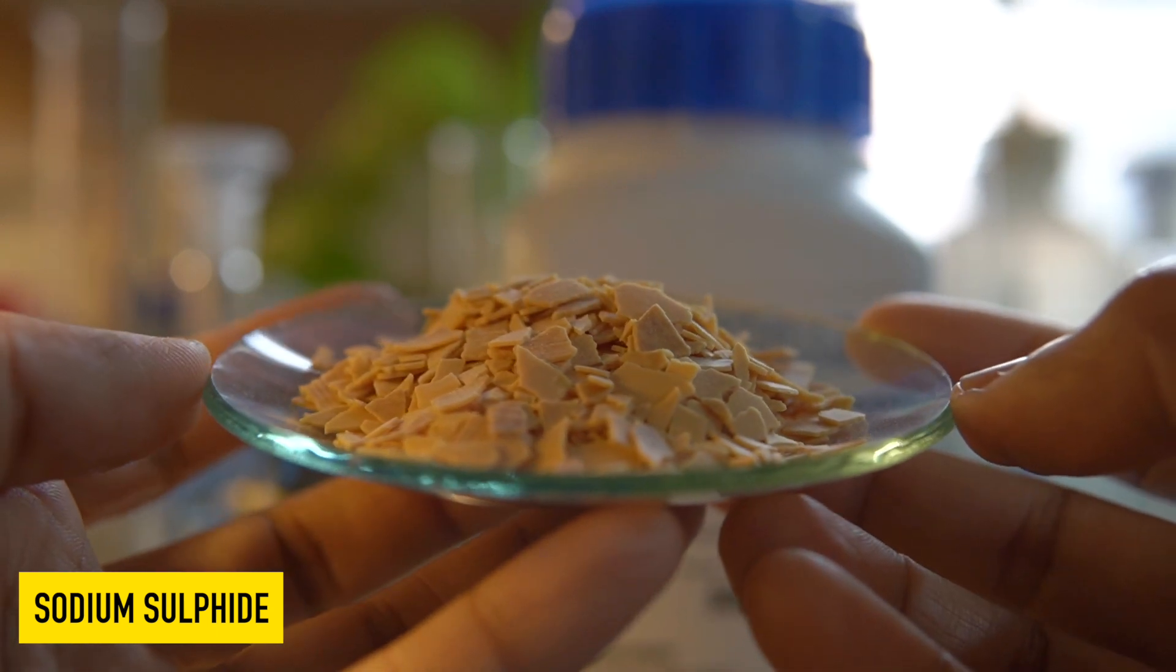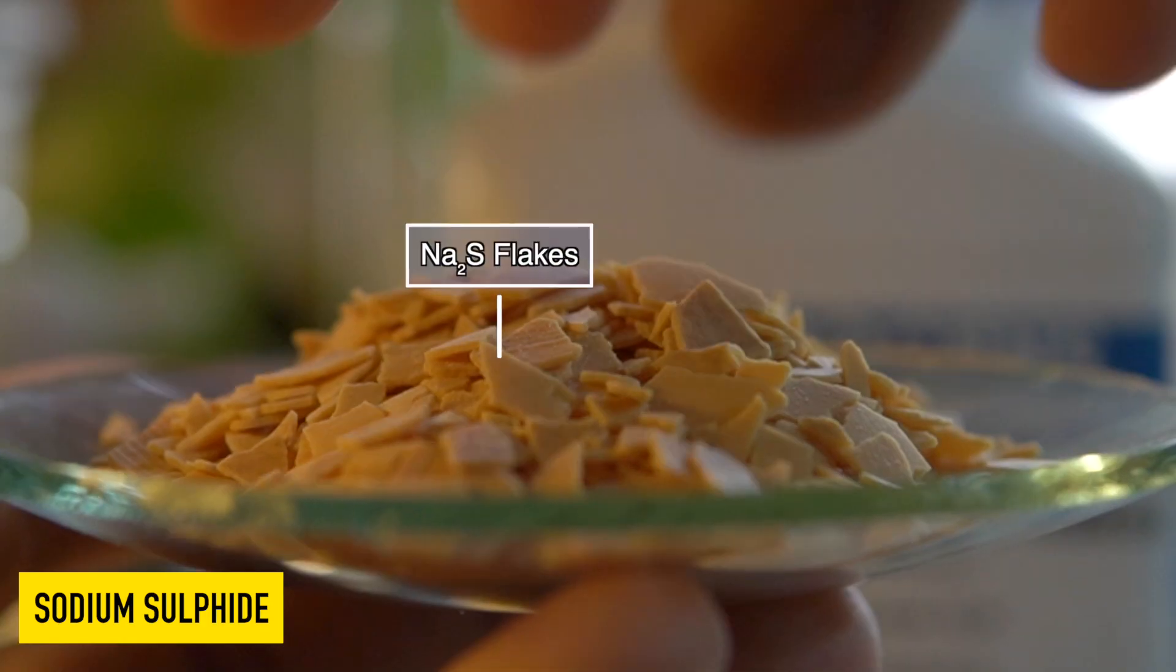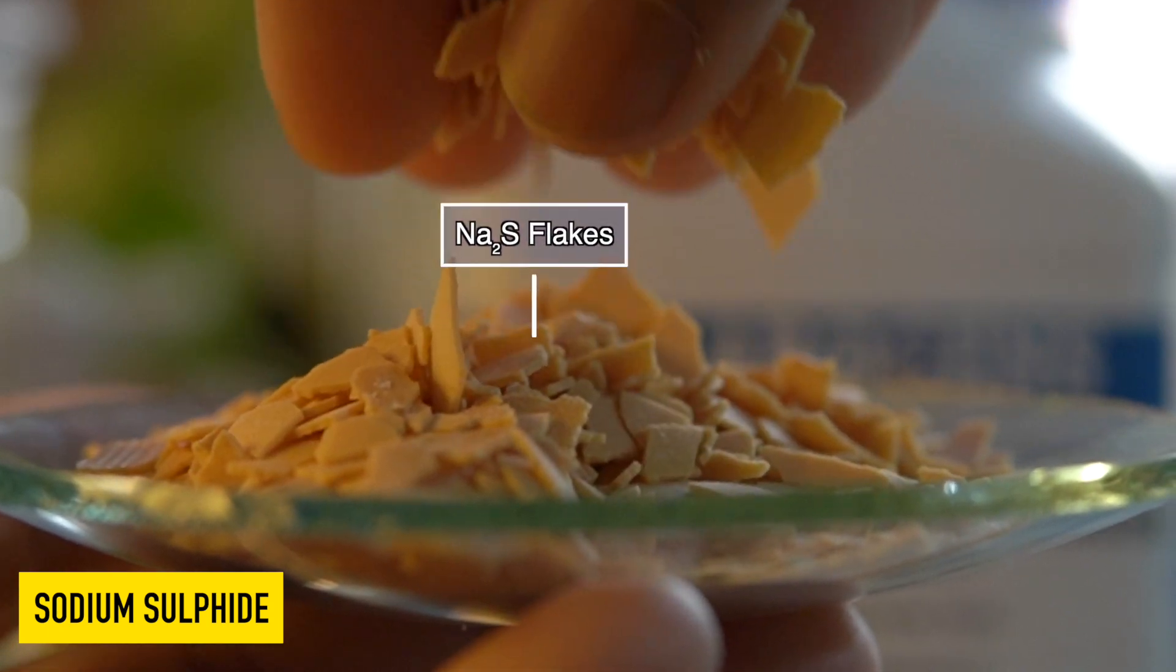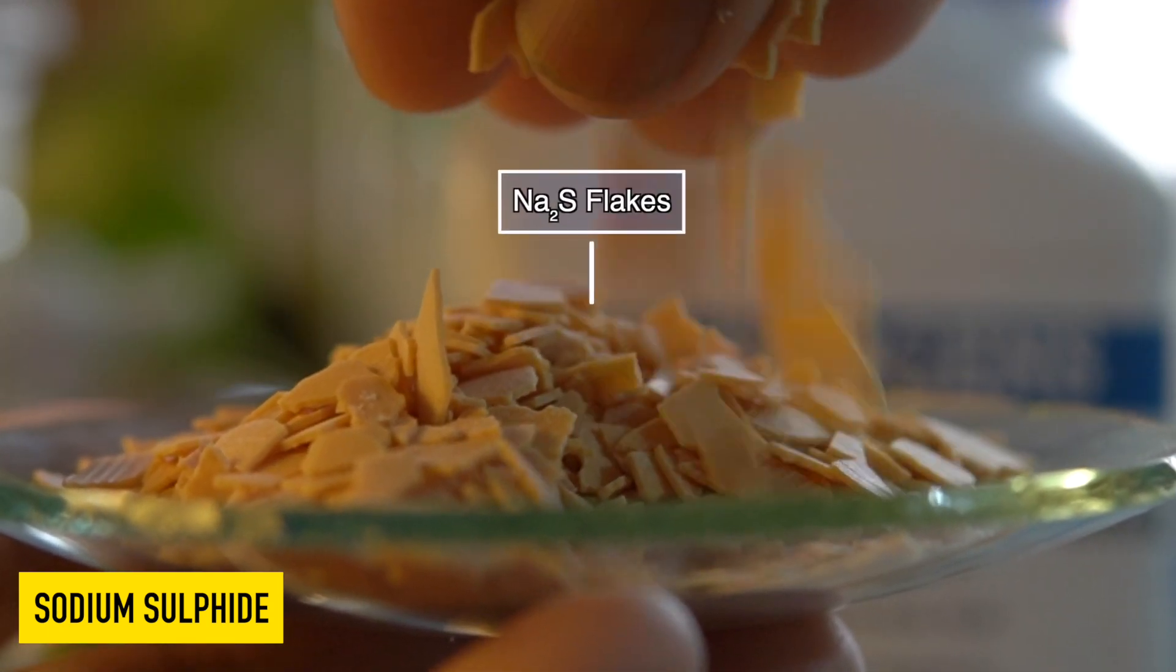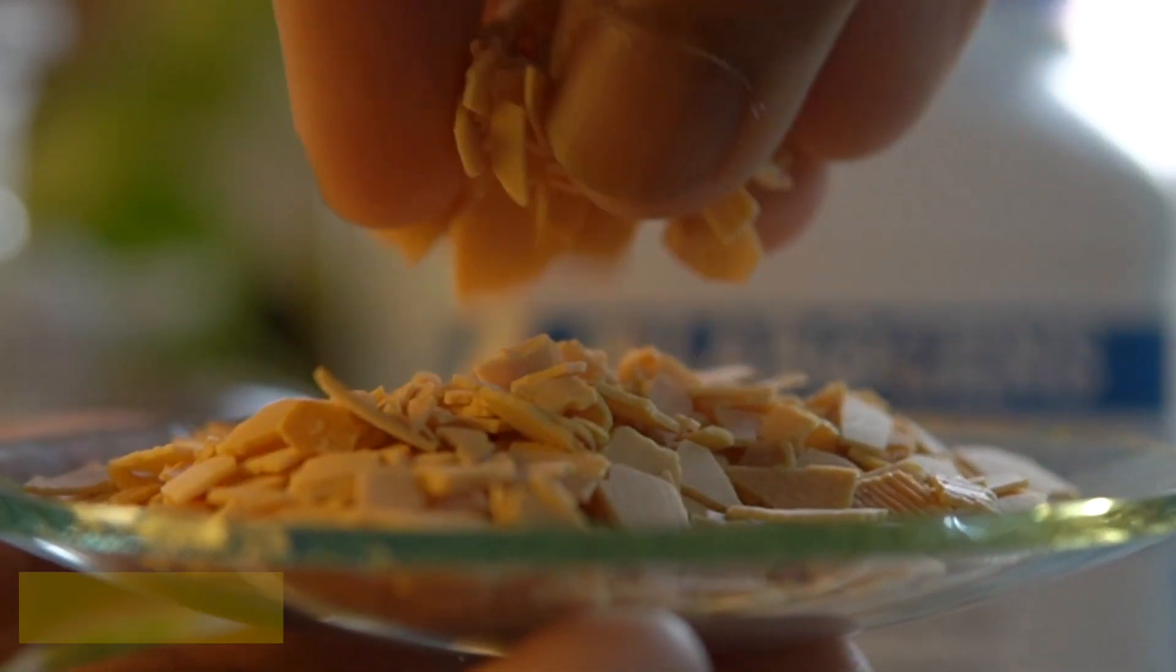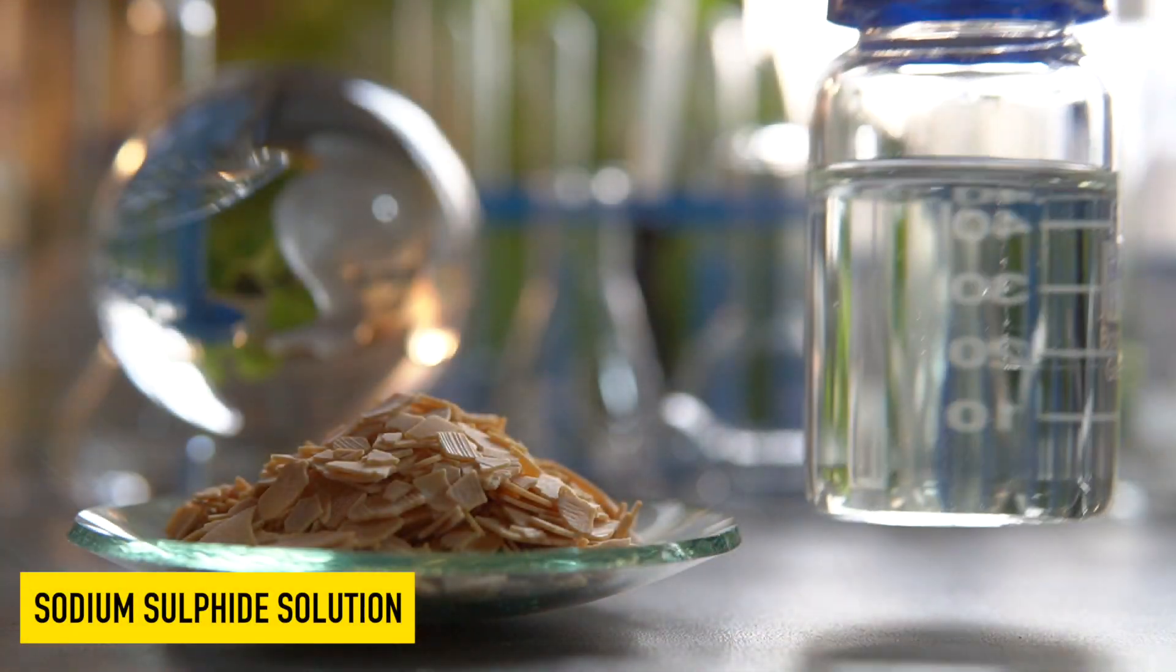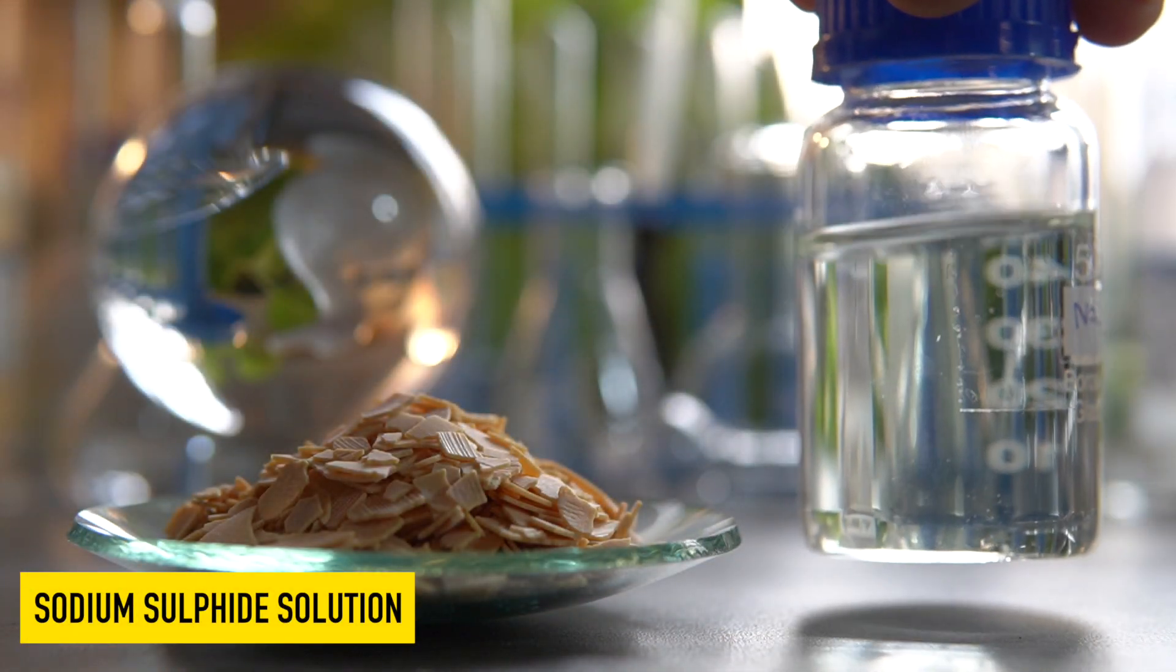These are sodium sulphide flakes. They are slightly yellowish in color and highly soluble in water. They can easily dissolve in water to make a clear colorless solution.